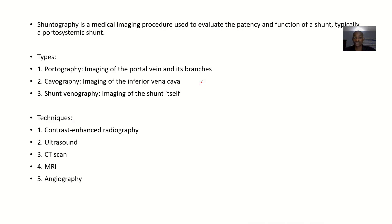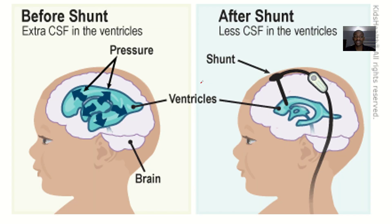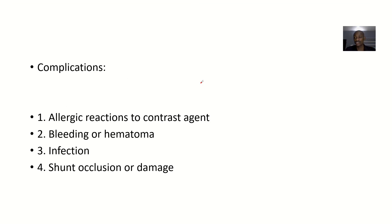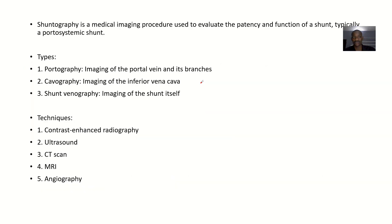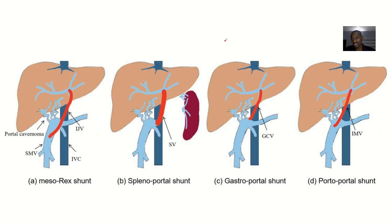We'll talk about shuntography — the types, the techniques, how you do it, the indications, the procedure, and the possible complications. Shuntography is a medical imaging procedure used to evaluate the patency and function of a shunt, typically a portosystemic shunt, but it applies to any other shunt in the body.